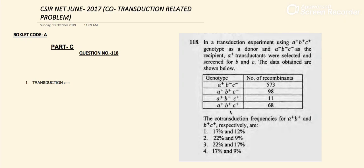Hello friends, today we are going to discuss a mathematical problem from CSIR June 2017, Booklet Code A, Part C, Question number 118. Part C carries 4 marks, and for any wrong answer, 25% marks will be deducted from our correct answer, so negative marking gives minus 1. Let's start today's problem.